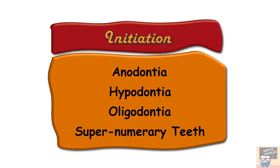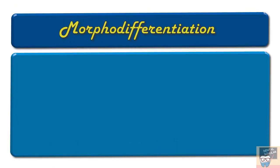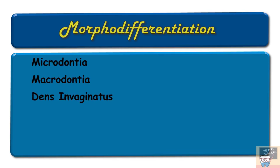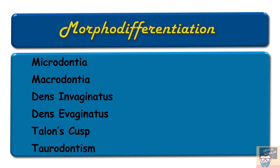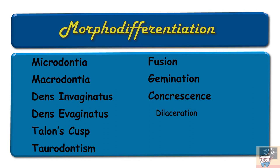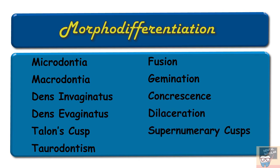A few examples of defects associated with morphodifferentiation are microdontia, macrodontia, dens invaginatus, talon cusp, taurodontism, fusion, gemination, concrescence, dilaceration, supernumerary cusps, and supernumerary roots.